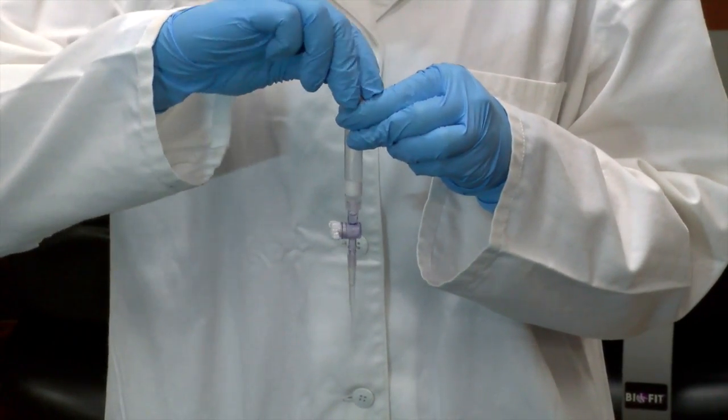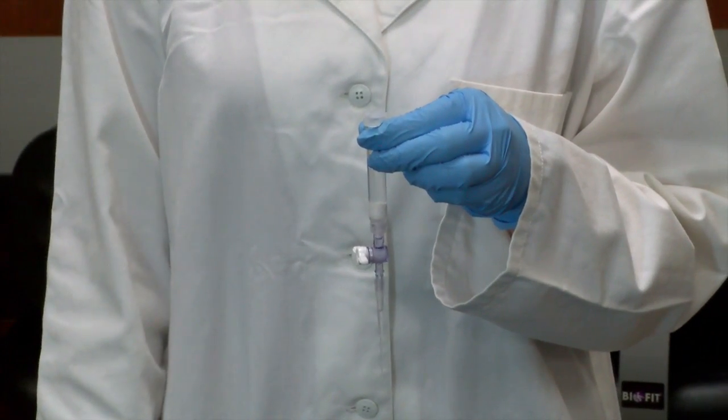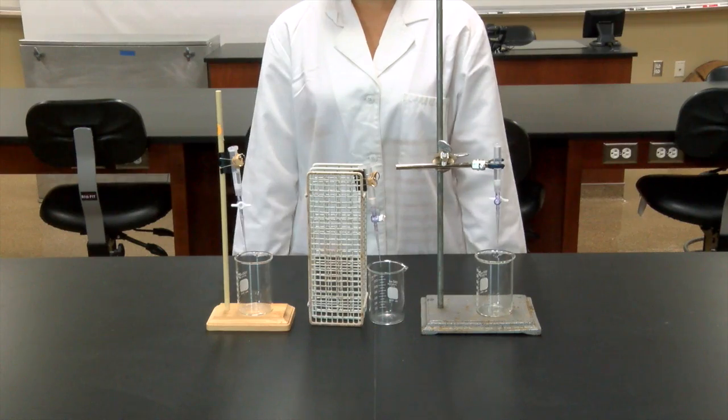To prepare the column, you should remove the bottom end cap and replace it with a pipette tip. You will also need to remove the top end cap.